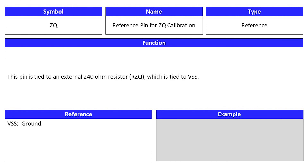Finally, the reference pin for ZQ calibration is a reference signal. Its symbol is ZQ. This pin is tied to an external 240 ohm resistor, or ZQ, which is then tied to VSS.